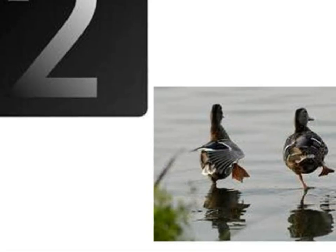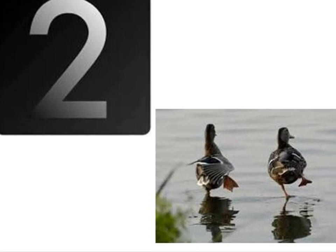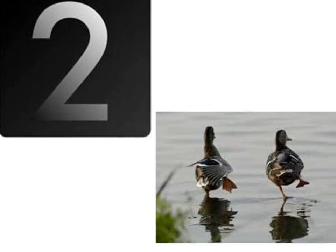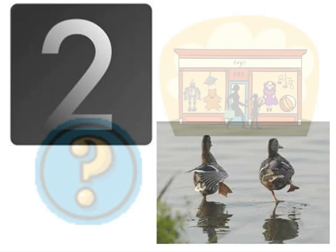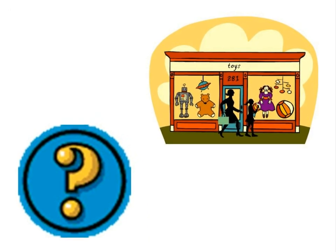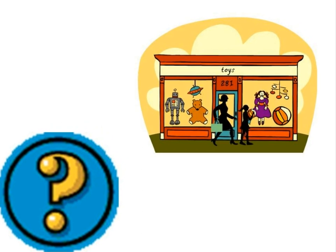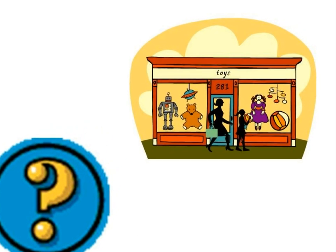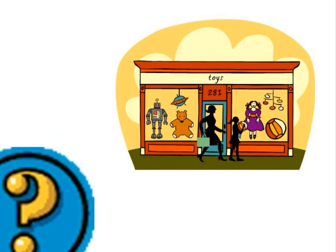Here are a few examples of using two, T-W-O, correctly: The two ducks swam in the pond beside each other. And: The number two comes before the number three. I went to the store, and to begin class, we did some warm-up questions. Both of these sentences show correct uses of the word to, T-O.